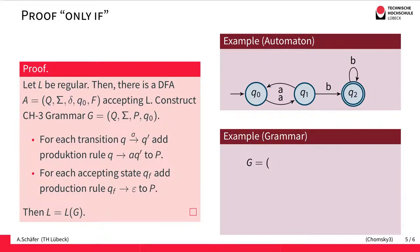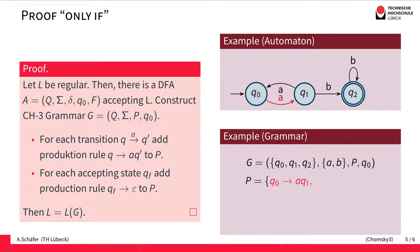Let's look at an example. We take this automaton here — it has only three states: Q0, Q1, and Q2. These three states form the non-terminals for our grammar. Our alphabet is still A and B, the same as for the automaton. Our start symbol is Q0, corresponding to the initial state. We go through all the transitions: from Q0 to Q1 with an A, we add a production replacing Q0 by A followed by Q1.